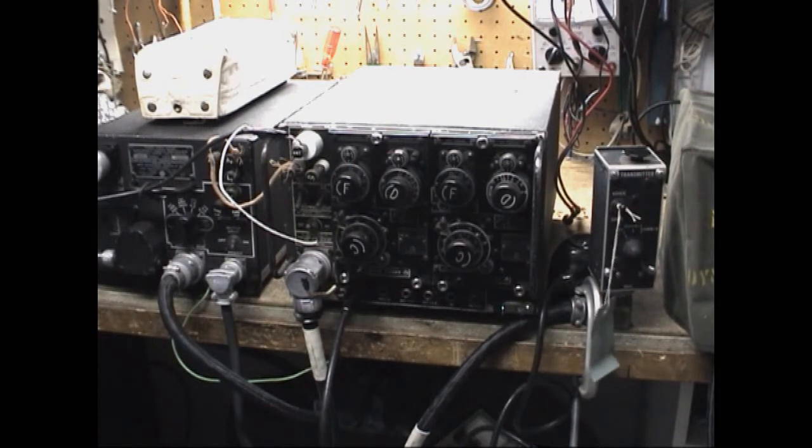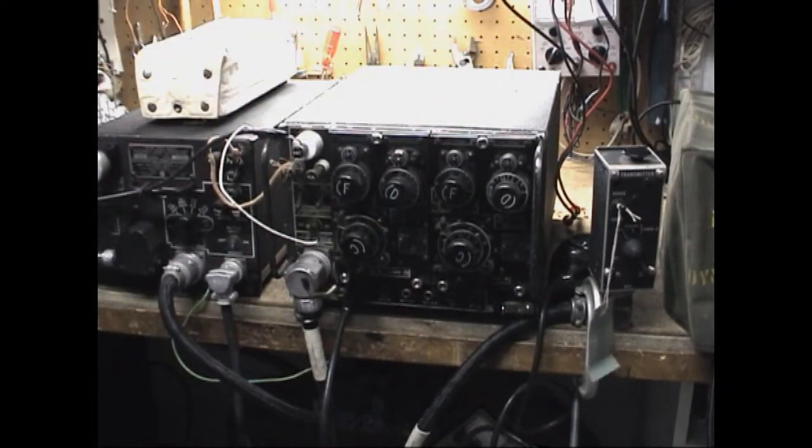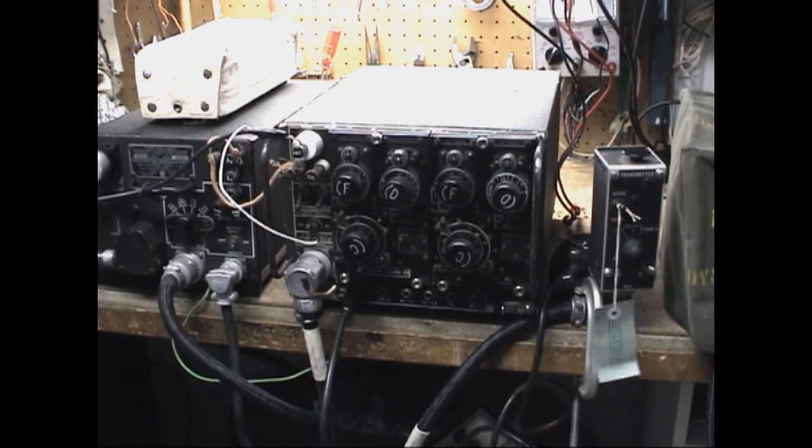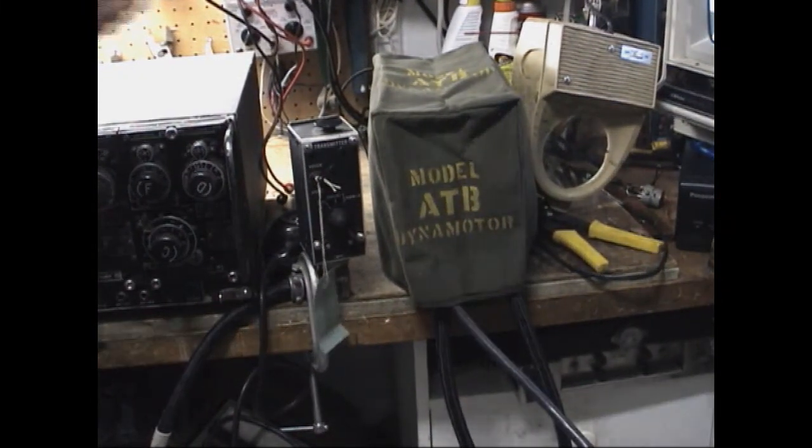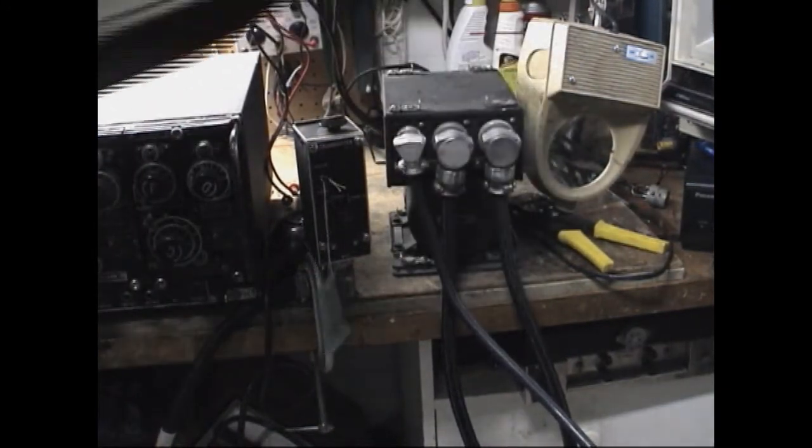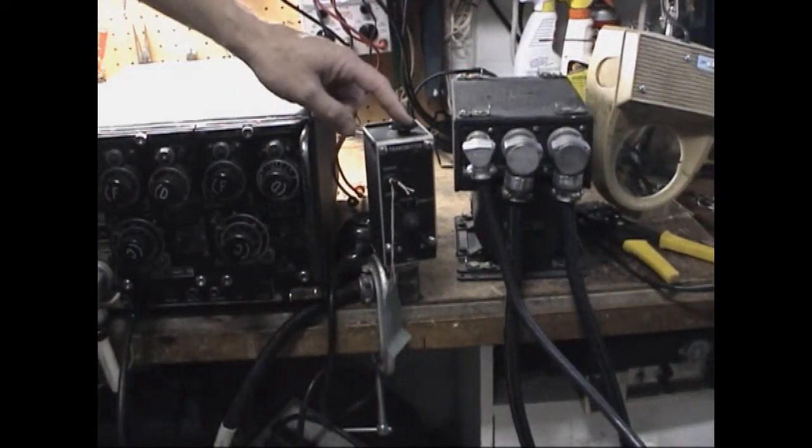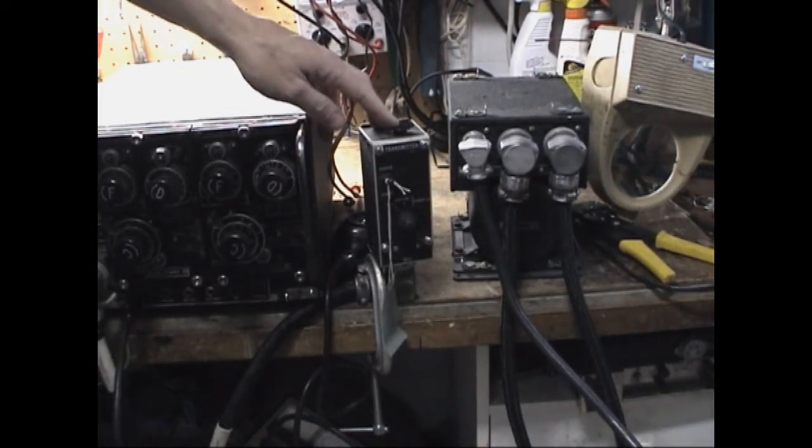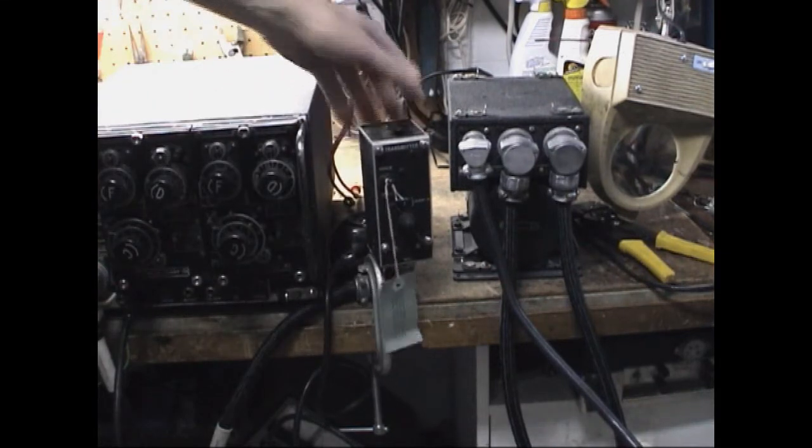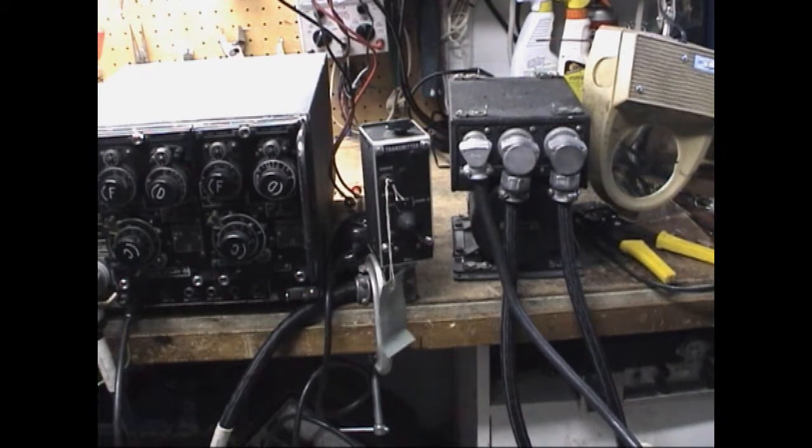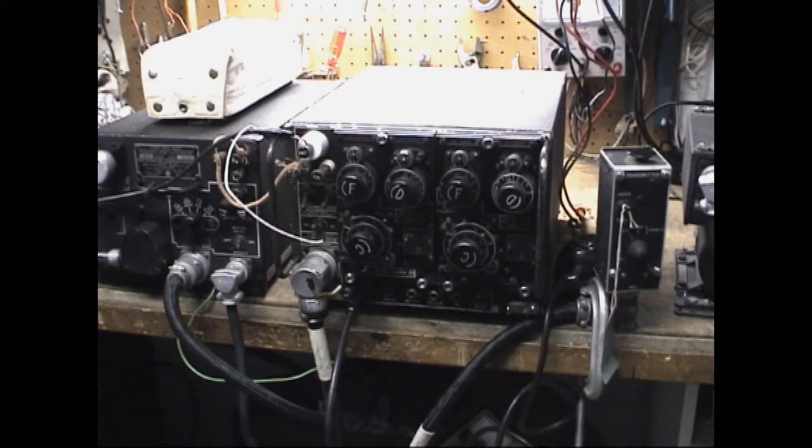The ATB transmitter covers 3.2 to 9 megs. It's covered with two removable tuning units. And it is powered by a dynamotor. This also uses a control box, very similar in size and shape to the ARB, voice and code switch off, channel 1 and channel 2 with your code key. Not much else on there. Most everything on the ATB is preset for a flight.